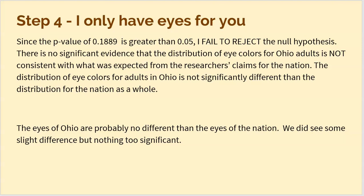Here's the conclusion for the eye color problem: since the p-value of 0.1889 is greater than 0.05, I fail to reject the null hypothesis. There is no significant evidence that the distribution of eye colors for Ohio adults is not consistent with what was expected from the researchers' claims for the nation. We did see a distribution that didn't exactly match what we expected, but it wasn't so far off that we could claim Ohio is significantly different from the rest of the nation. When you have a high p-value, you're saying: yeah, I didn't see what I expected, but that's what happens when you sample — random samples don't always match up perfectly.